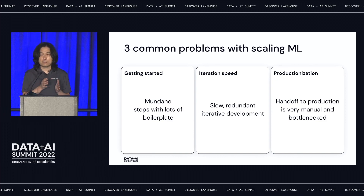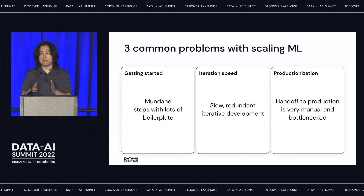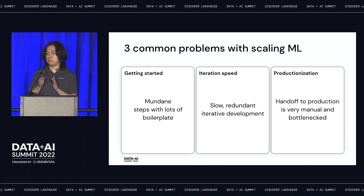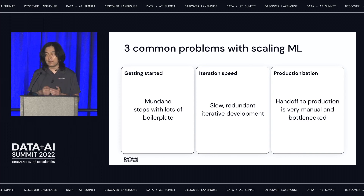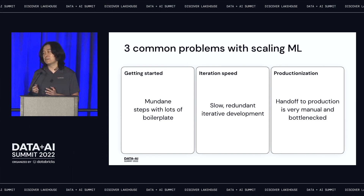After this stage, companies have baseline models trained. They want to improve and focus on those that impact their business the most, and continue improving those models through iterative development. And then, last, they need to ship those models into production. This is usually the bottleneck.